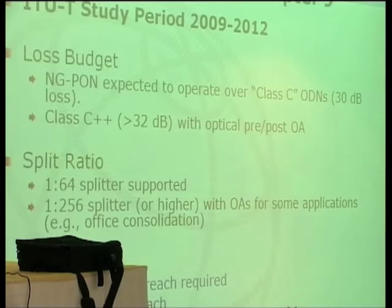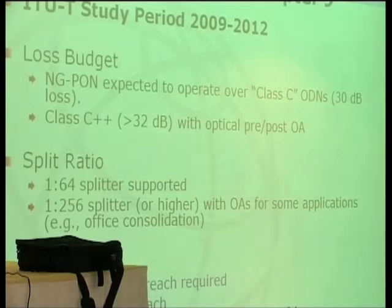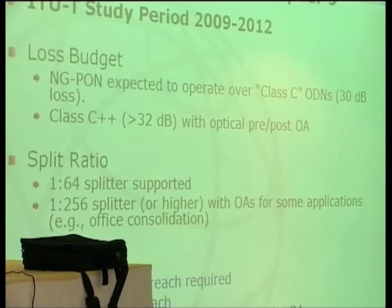For special applications, a 1:256 splitting ratio can be used with optical amplifiers. A 1:256 ratio means about 6 dB more loss than 1:64 plus insertion loss, but if you put an amplifier providing 25 dB of gain, you have solved the problem. The physical reach will not increase since customers are not moving away from the central office, but for consolidation purposes you can increase the physical reach by adding optical amplifiers.